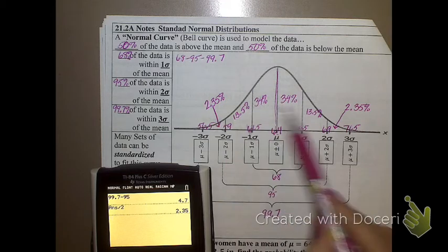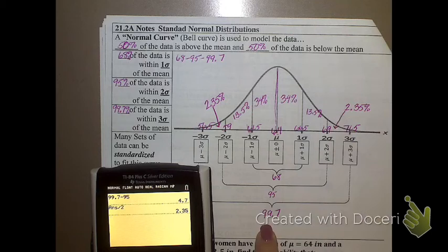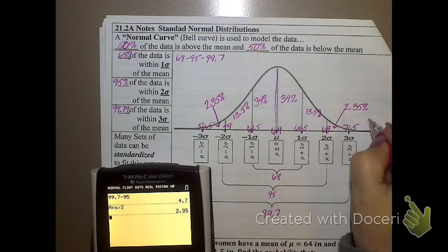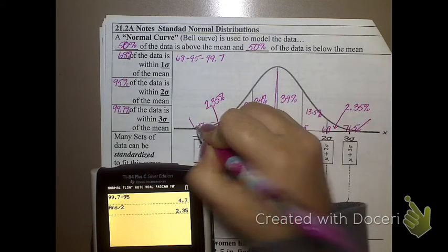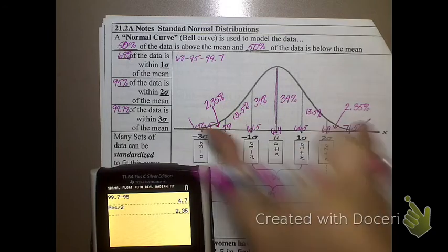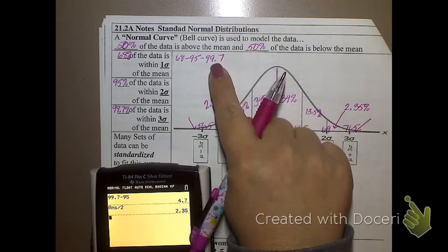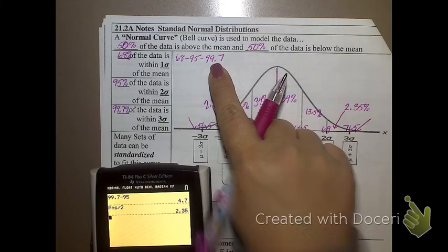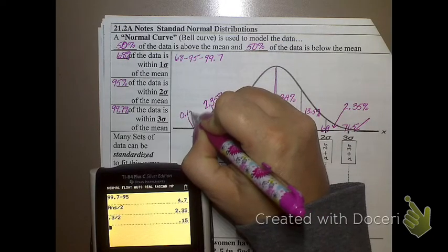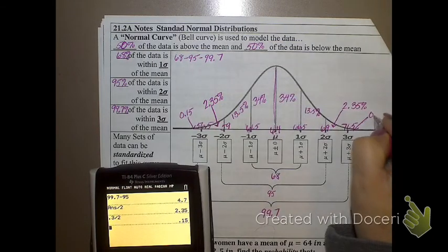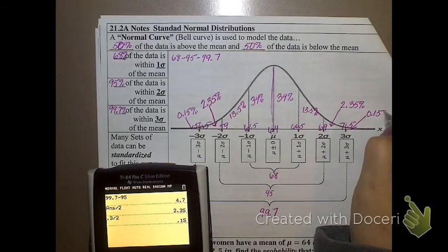Now, does all this together add to 100%? What does this all together add to right now? 99.7%, which means that this teensy little bit that's outside of three standard deviations also has a value. What do those two sections together equal? 0.3%, the remaining 0.3% between 99.7 and 100. So, if I take 0.3 and I divide it by 2, I get 0.15 right there, and 0.15.